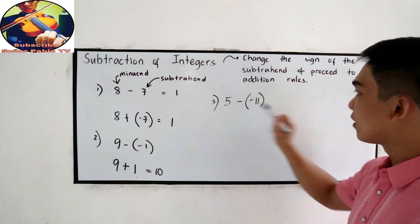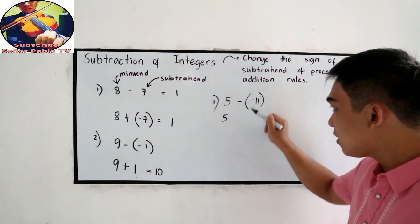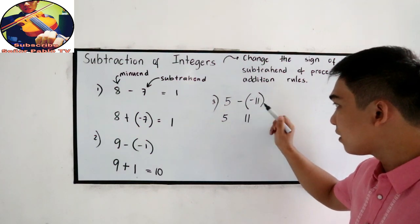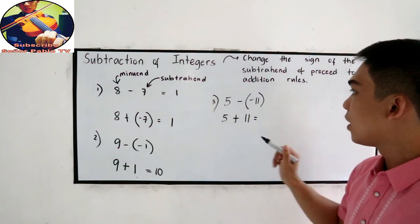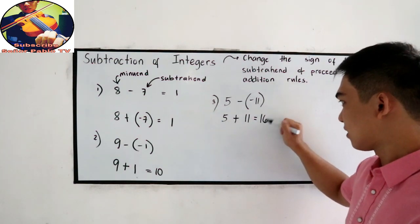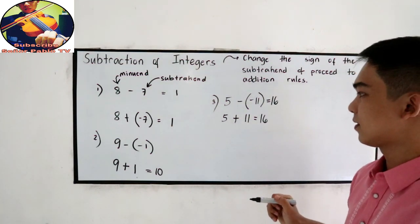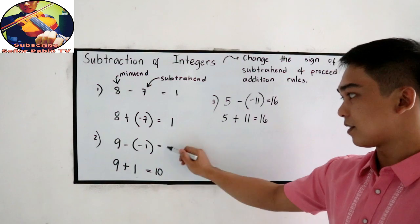So this is 5 plus 11, 16. This is equal to positive 10.